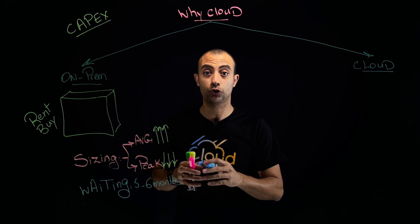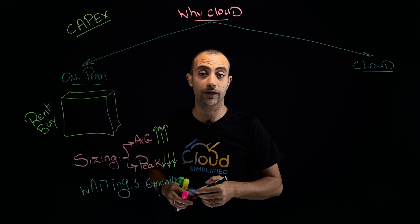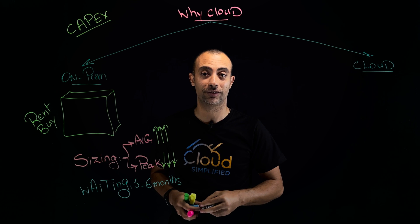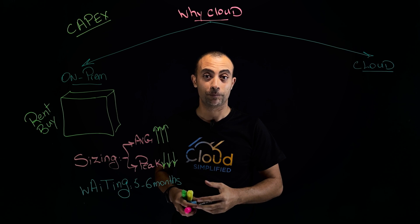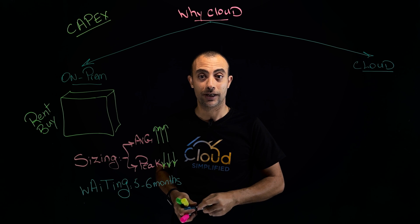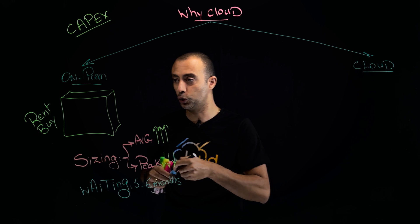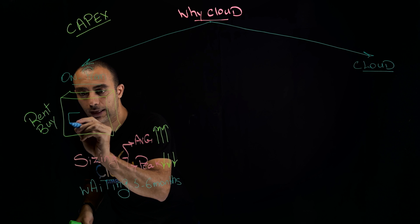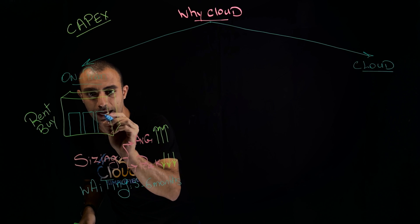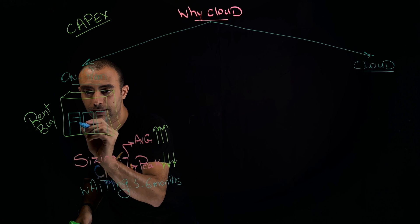After waiting six months for delivery, can you go live? Still no — because you haven't done any racking and stacking. You need to unbox your servers, place the racks inside the data center, and then do the racking and stacking.